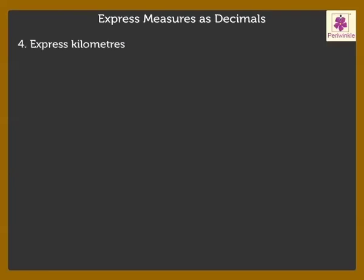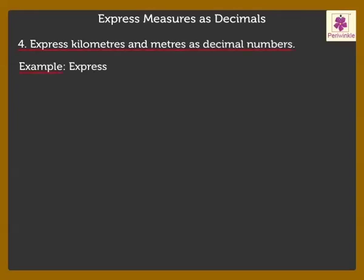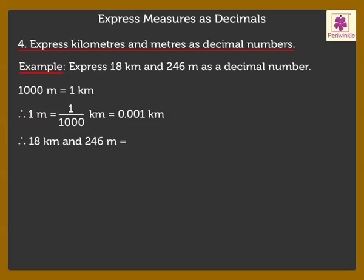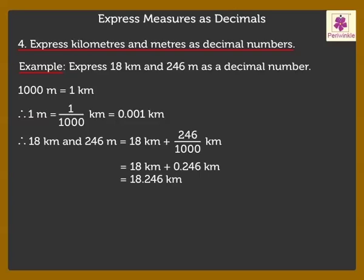Now, let us express kilometers and meters as decimal numbers. Express 18 kilometers and 246 meters as a decimal number. 1000 meters is equal to 1 kilometer. Therefore, 1 meter is equal to 1 upon 1000 kilometer, which is equal to 0.001 kilometer. Hence, 18 kilometers and 246 meters is equal to 18 kilometers plus 246 upon 1000 kilometers, which is equal to 18.246 kilometers.